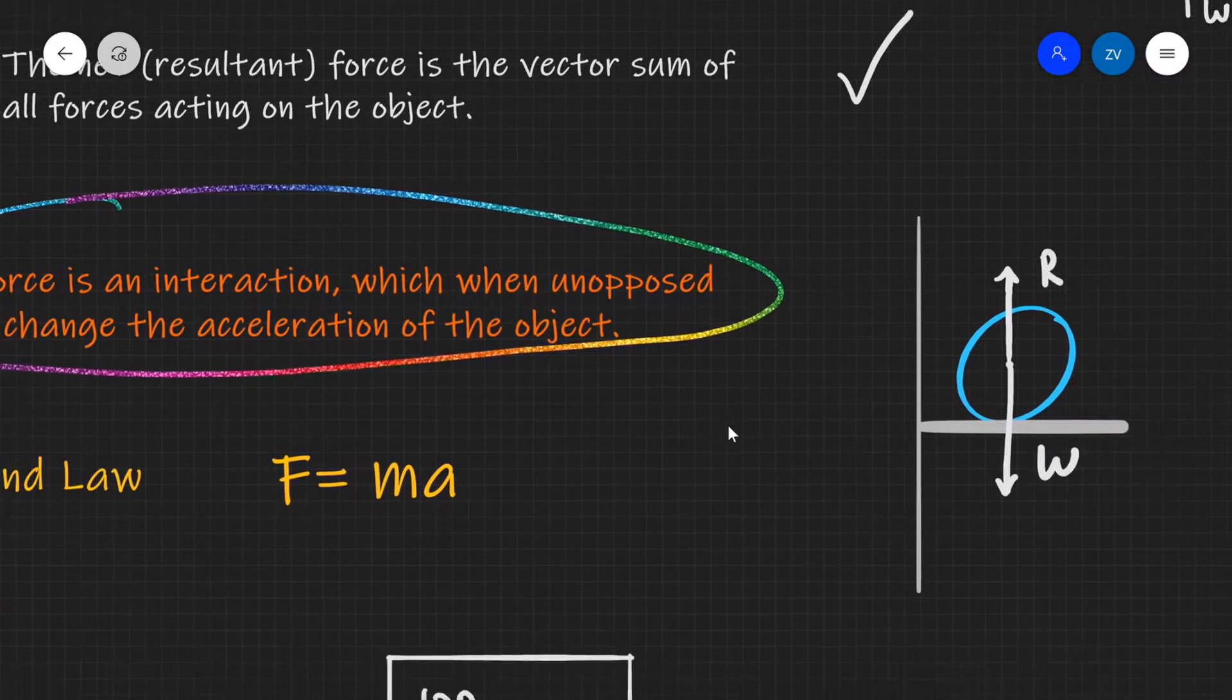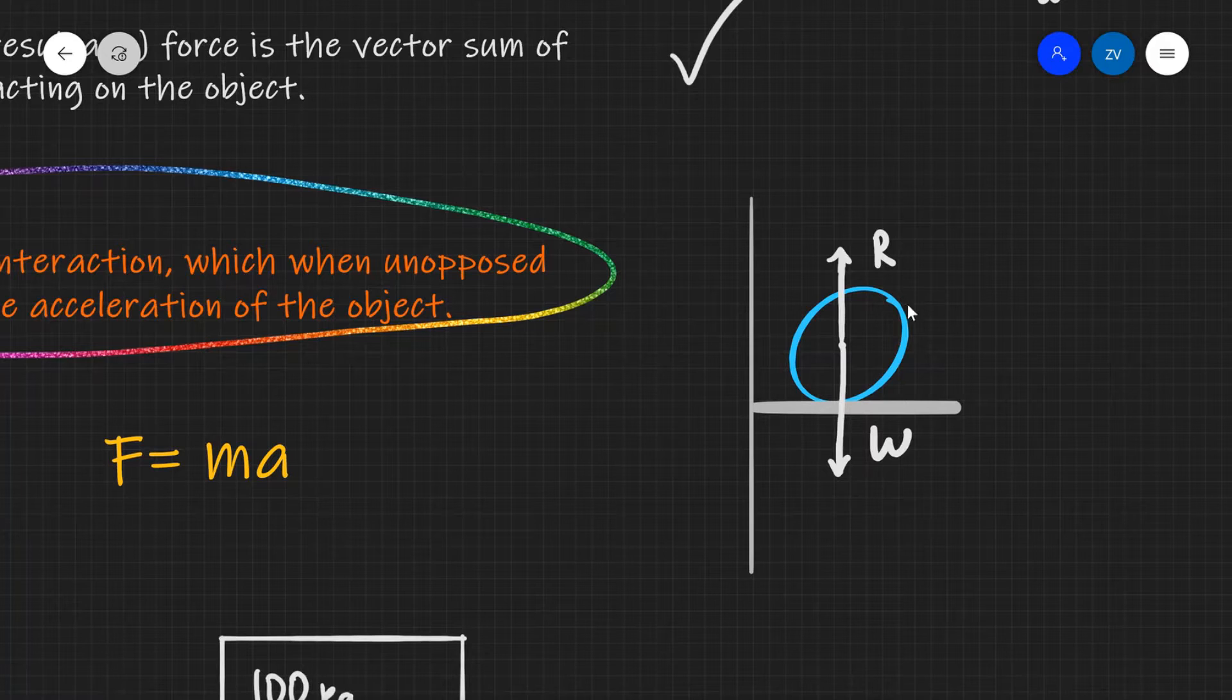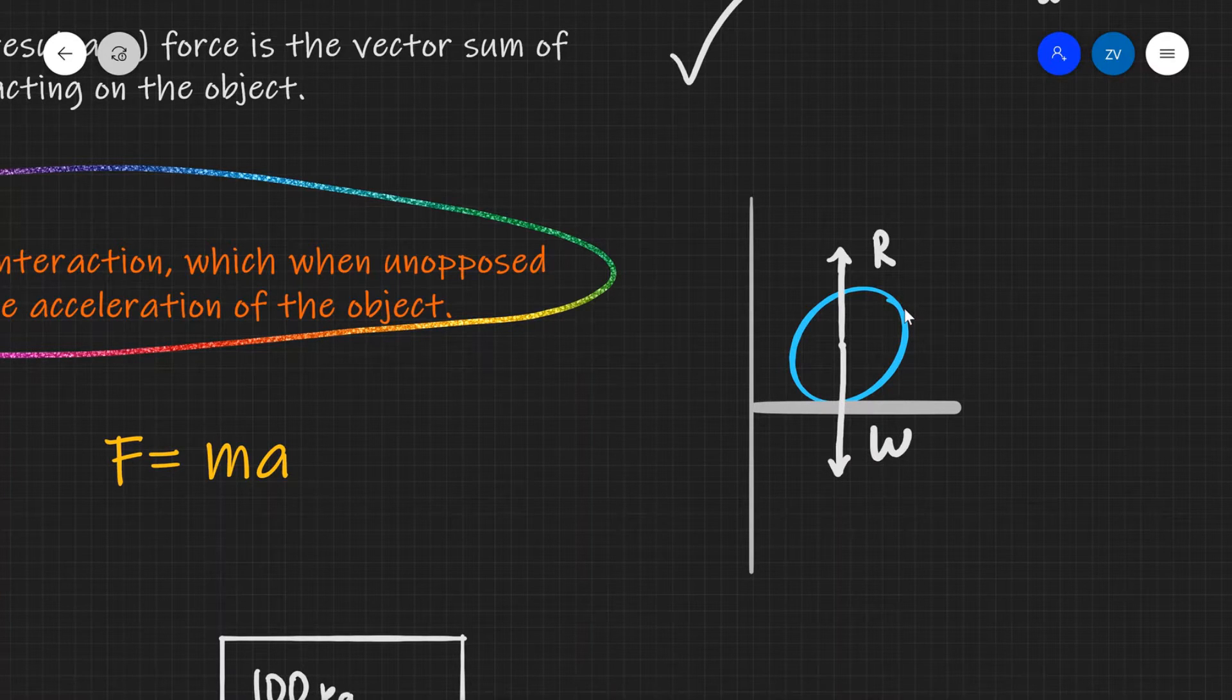Now let me give you an example. Let's imagine that we have an object. In this case, I've drawn a sphere. The actual type of object here is irrelevant. And this is supported on something like a shelf. So we have two forces acting. We have the force due to gravity, which is the weight acting downwards. And we have the normal reaction from this support, which is acting upwards.